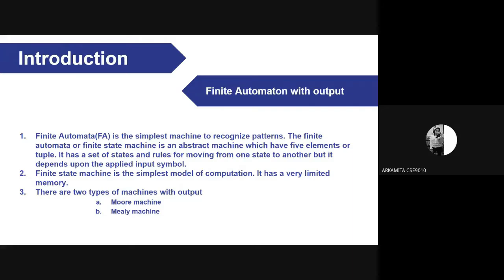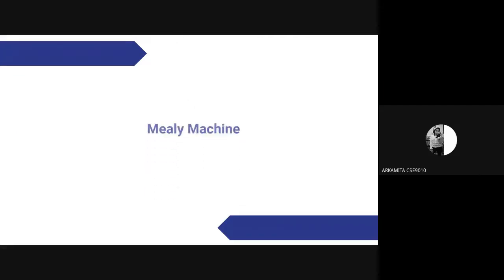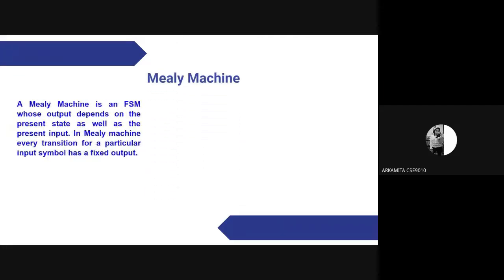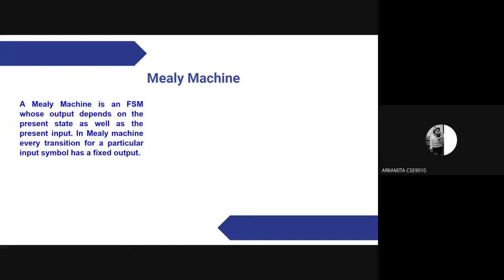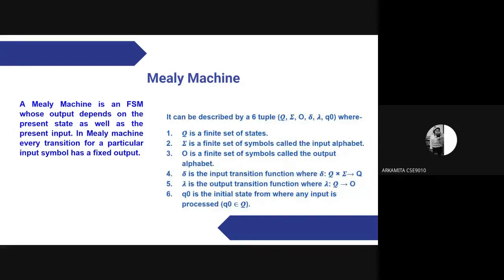It has very limited memory. There are two types of machines with output: the Mealy machine and the Moore machine. A Mealy machine is a finite state machine whose output depends on the present state as well as the present input.